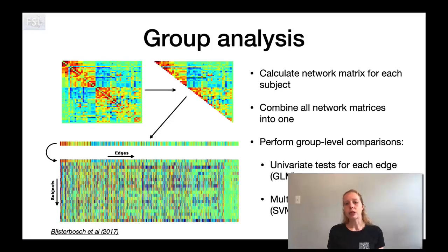A group level analysis essentially uses these network matrices as input. So what we can do is we can isolate the unique information. If we have a symmetric matrix, we can use only the information above the diagonal so that we have all of the unique edges. Then we can essentially have one long vector of edge values per subject and repeat that for all of our subjects. That's this matrix at the bottom here, combining the information across subjects vertically and across edges horizontally.